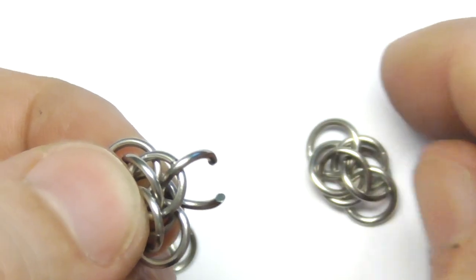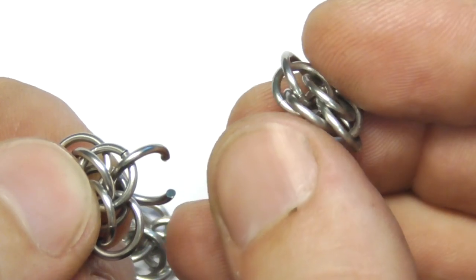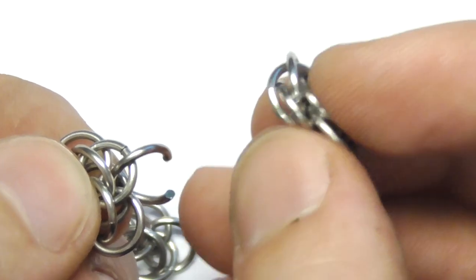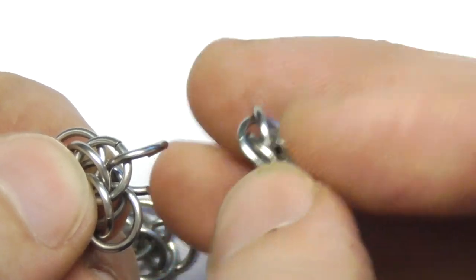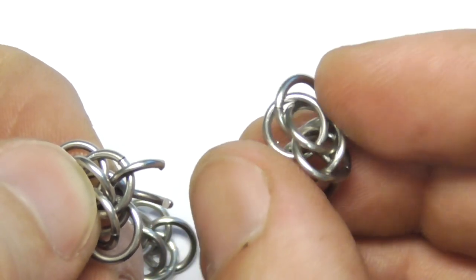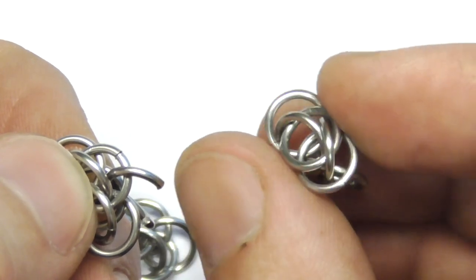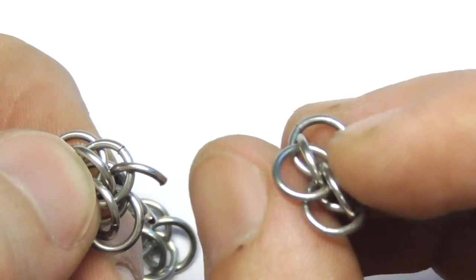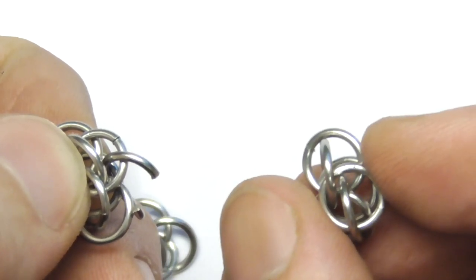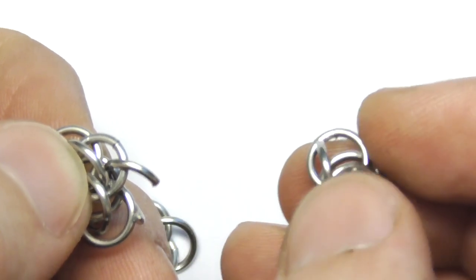Now let's take another basic element. Here are the parallel rings. We should put these two rings on this open ring. But you got to check the position of these two rings.